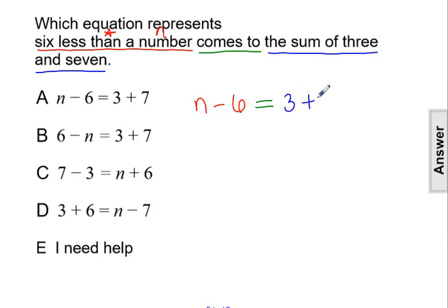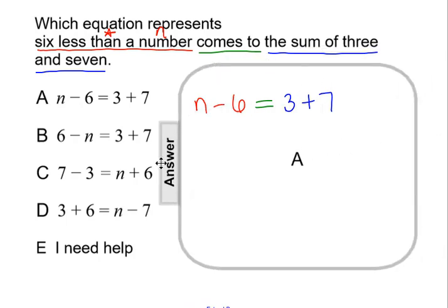So we have three plus seven. So six less than a number comes to the sum of three and seven can be represented with this equation, n minus six equals three plus seven, which is the same as answer choice A.